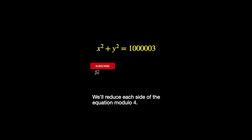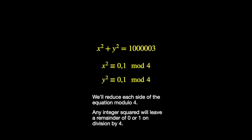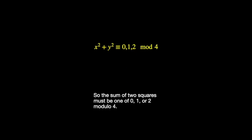We'll reduce each side of the equation modulo 4. Any integer squared will have a remainder of 0 or 1 when you divide it by 4, meaning it's 0 or 1 modulo 4. So the sum of two squares must be one of 0, 1, or 2 modulo 4.